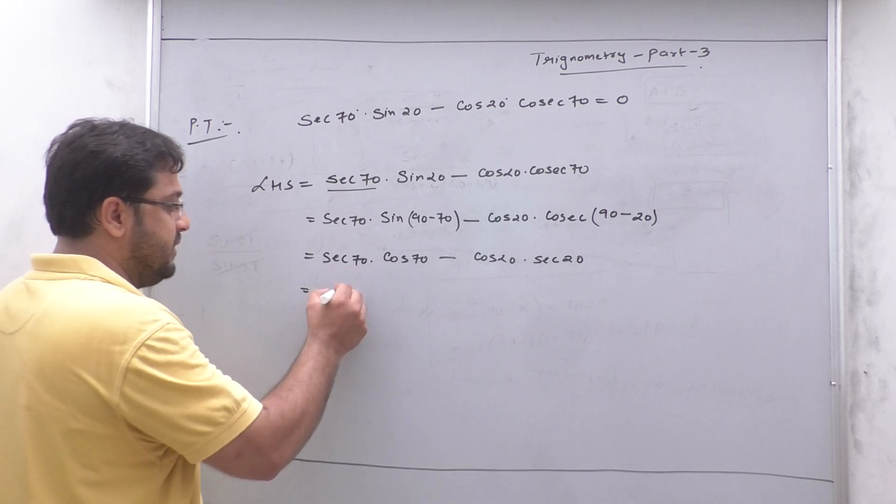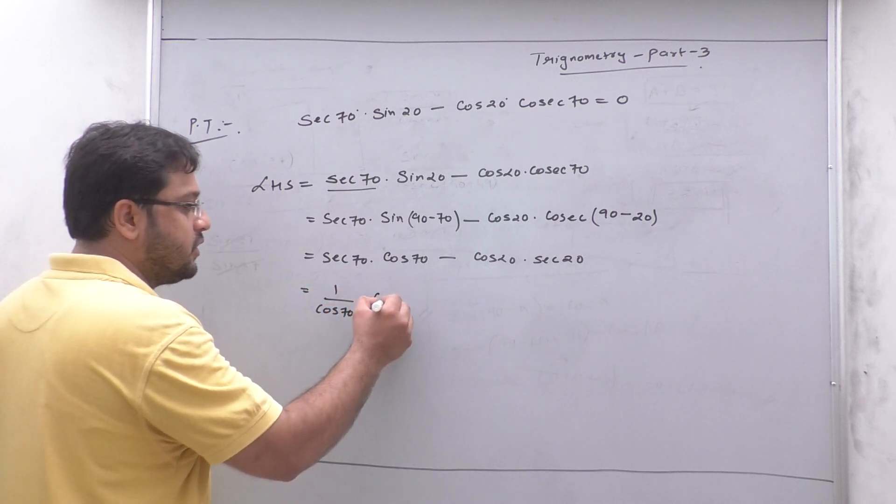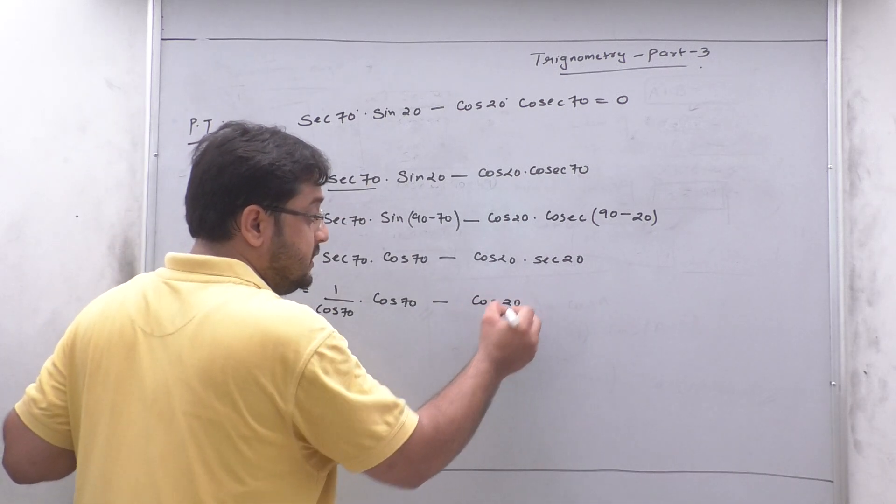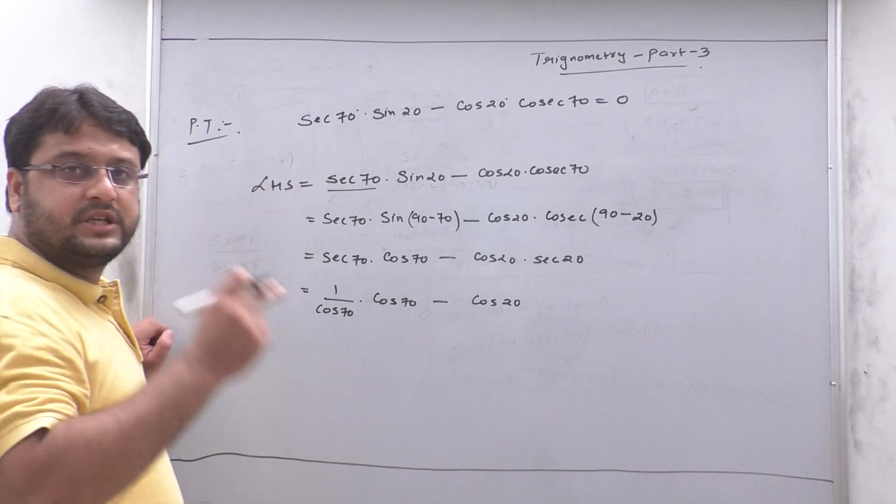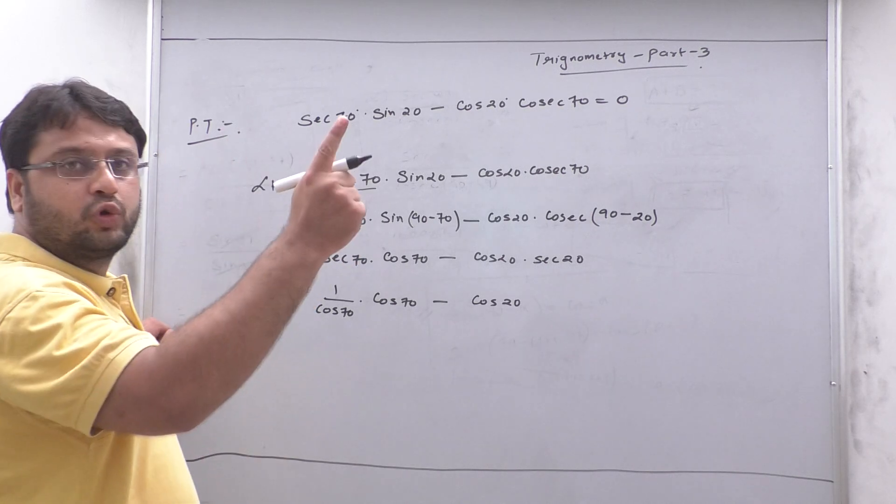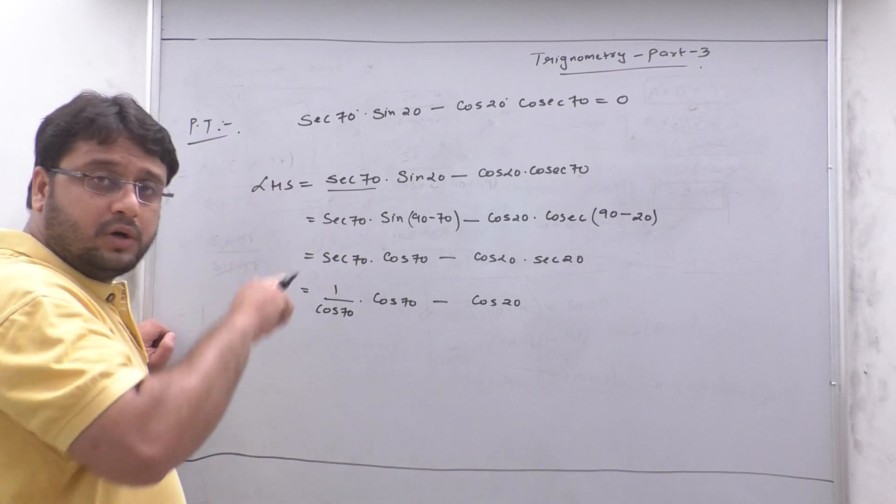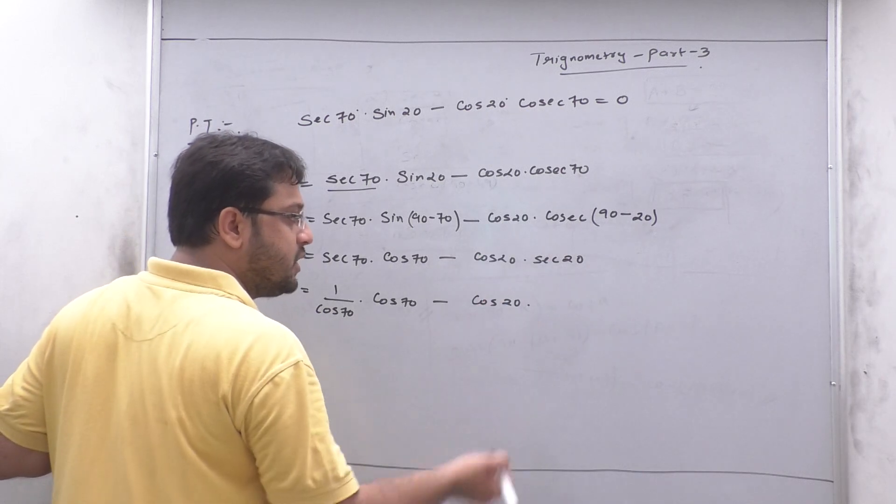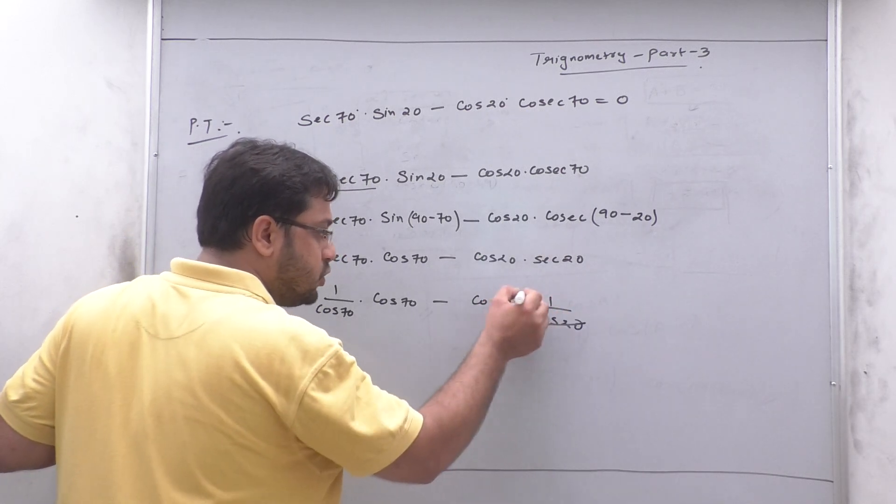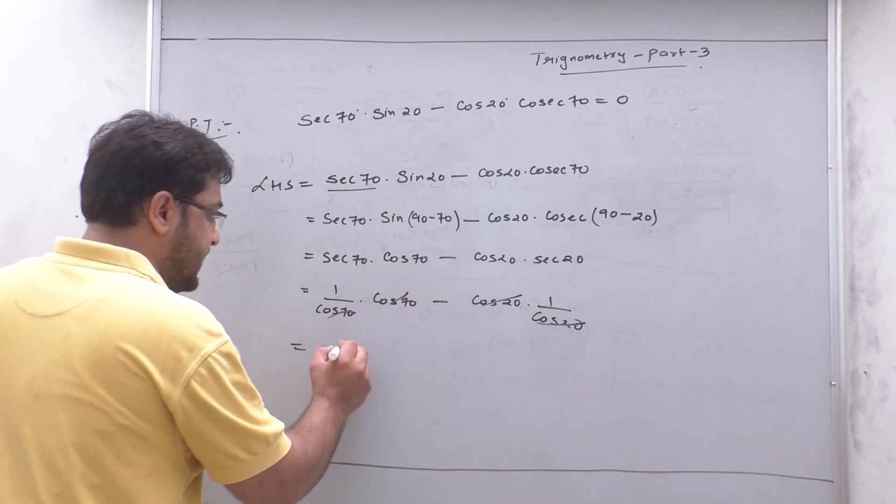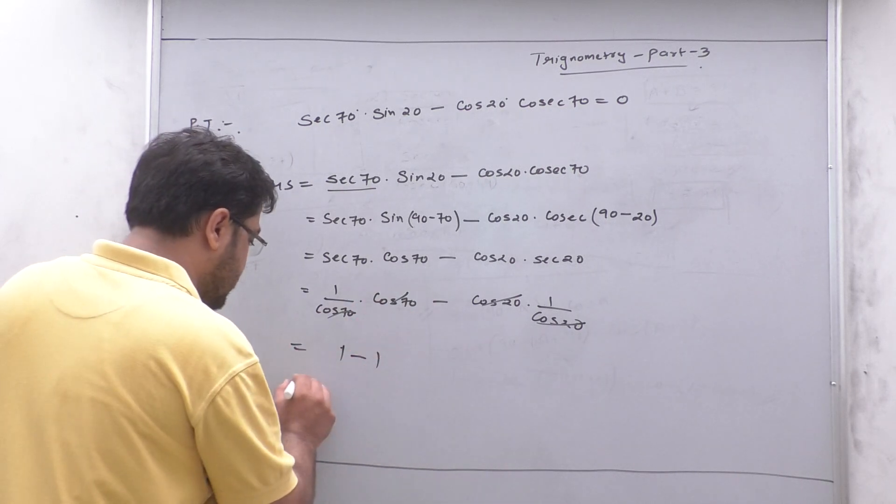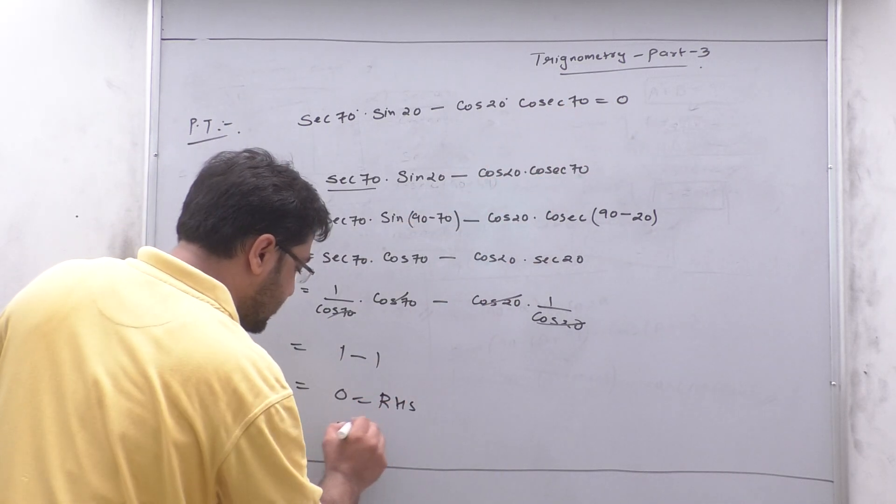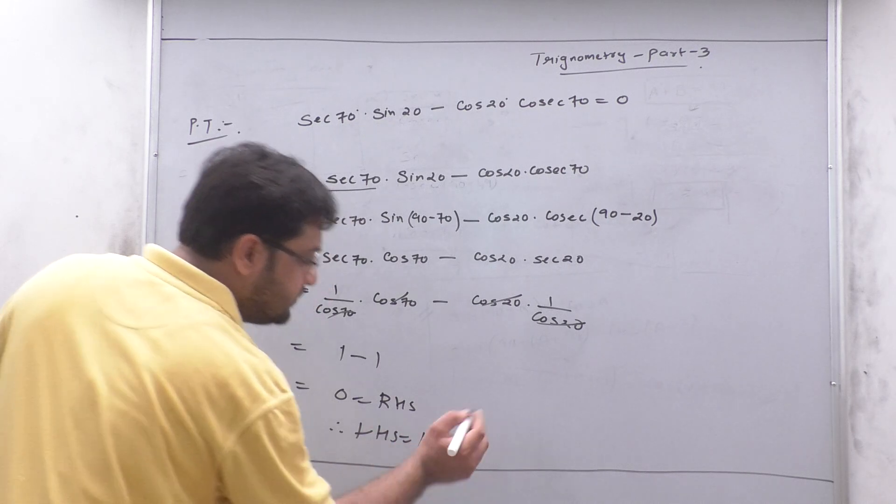So if the same is sec, it's called one by cos 70. This is sec. This is sec is one by cos. But the answer is 1 into 1, 1 minus 1, equal to 0. How about this? This is equal to 0, and this is equal to what? RHS. LHS is equal to RHS. Okay?